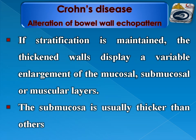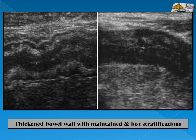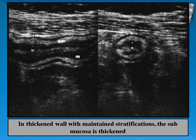Alteration of bowel wall echo pattern: if stratification is maintained, the thickened walls display variable enlargement of the mucosal, submucosal, or muscle layers. The submucosa is usually thicker than the others. Examples show thickened bowel wall with maintained stratification or layering of the wall, and another example with nearly lost stratification especially in the far wall. The submucosa — the hyperechoic layer — is thickened more than the other layers.